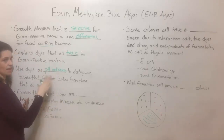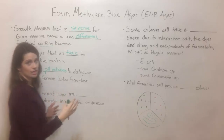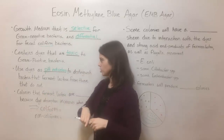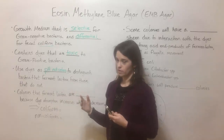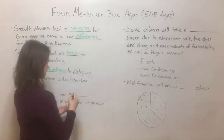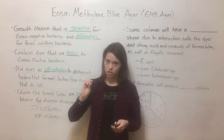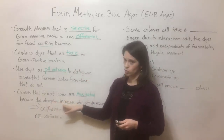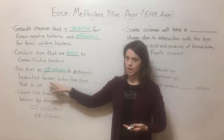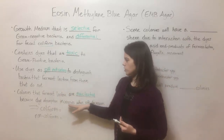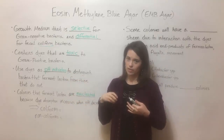By plating these kinds of bacteria on EMB agar, you can distinguish those that ferment lactose, like E. coli, from those that do not, like Salmonella and Shigella. The colonies that do ferment lactose, like E. coli and other coliform bacteria, will actually be nucleated — meaning the colony has a dark center from that dye. That's because the dye absorption increases when pH decreases: when lactose is fermented, the acid product lowers the pH, which increases dye absorption, giving the colony a dark center.